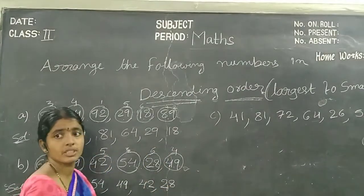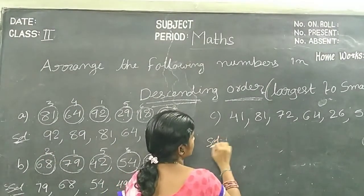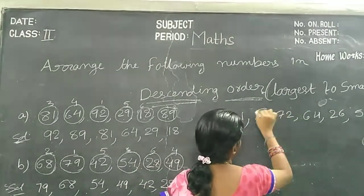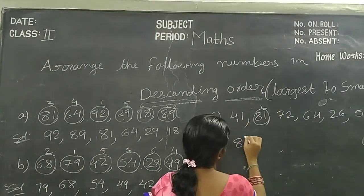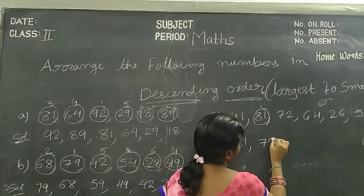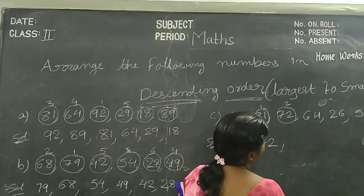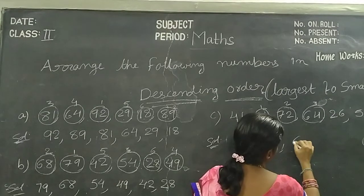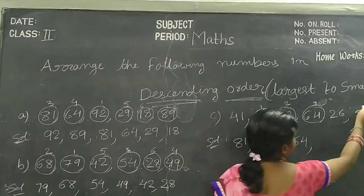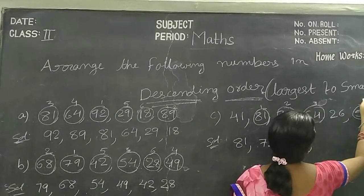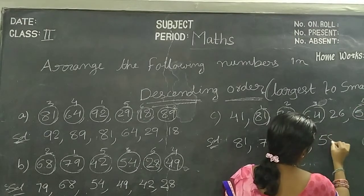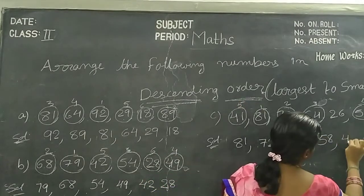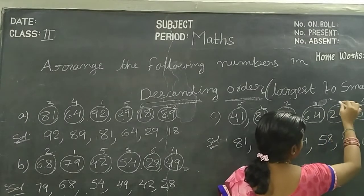See another example, children. In this example, what is the largest number? Sorry — 81. Next number is 72. Next number is 64. Next number is 58. Next number is 41. Next number is 26.